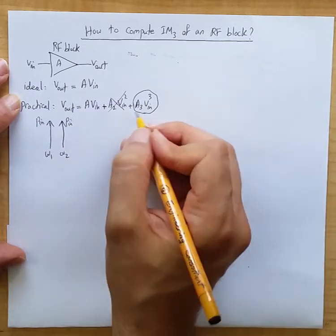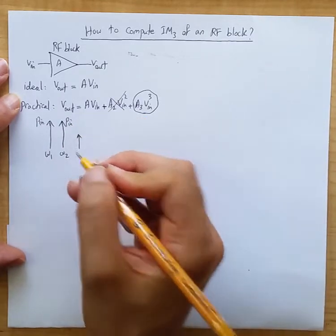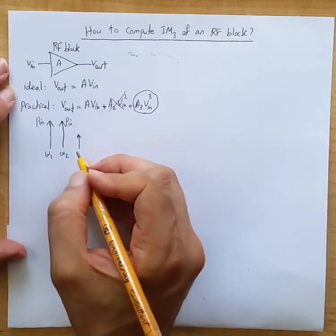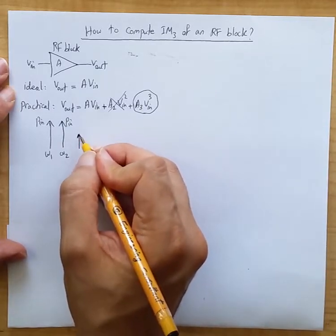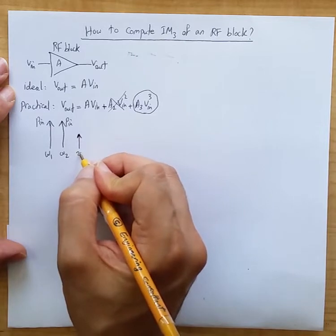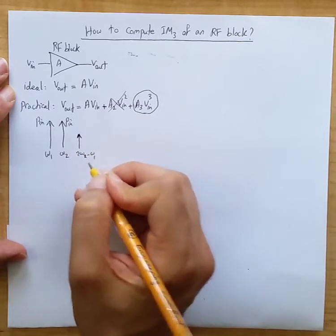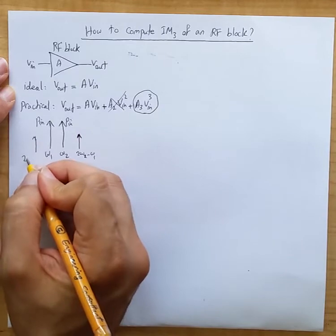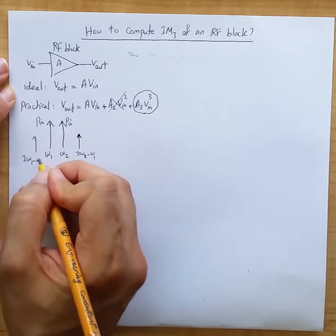We know that because of the third-order non-linearity, we get a couple of harmonics and non-linearity. We get, for example, 2 omega 2 minus omega 1 and we get 2 omega 1 minus omega 2.